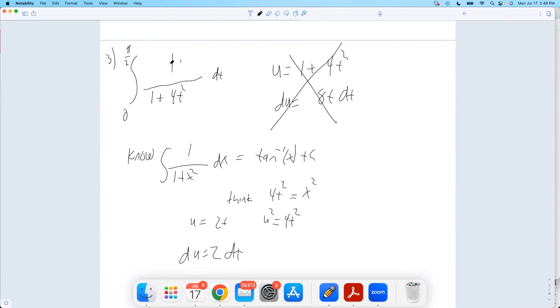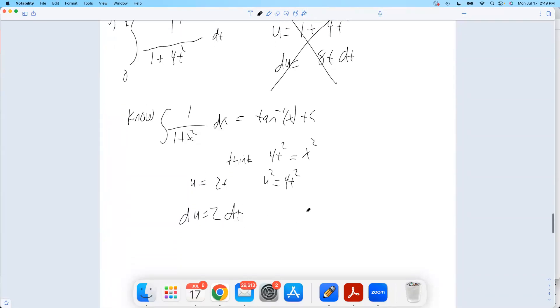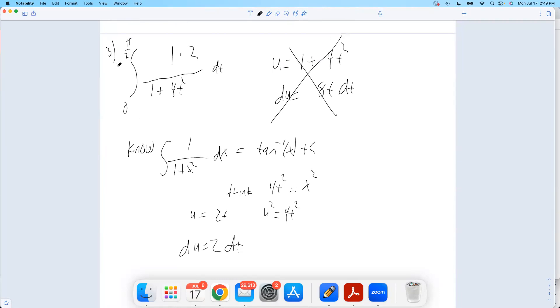then du would be 2 dt. Remember, you have to have exactly, perfectly, your du sitting in your integral. I don't have a 2 here. Well, I can put in a 2. I can, you can put in constants, multiplied, not added or subtracted, multiplied or divided, as long as you put it in and take it out. Okay, then this will be, that will be du.